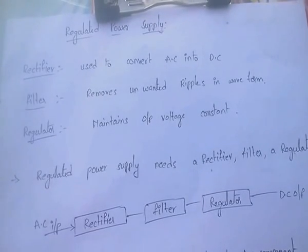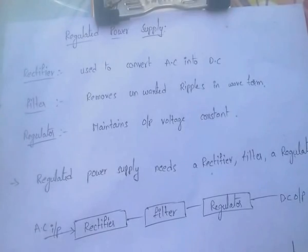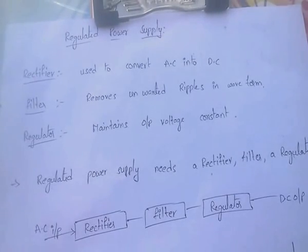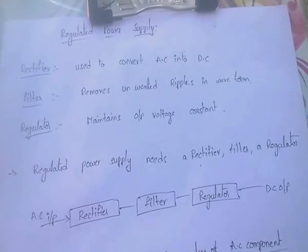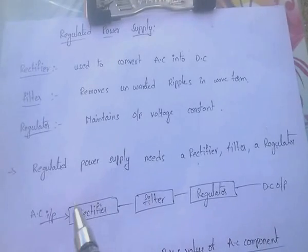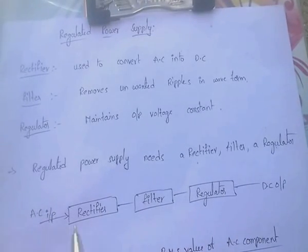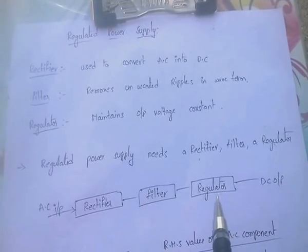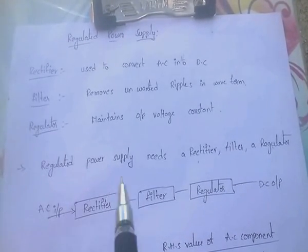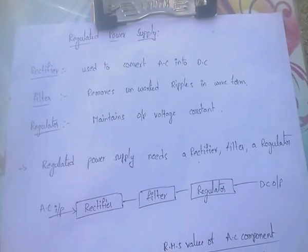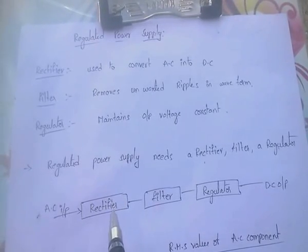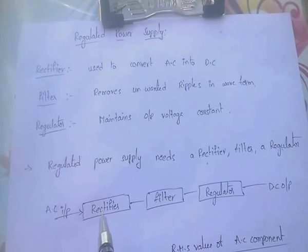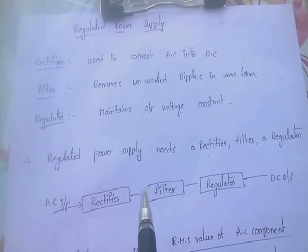In this video I am going to discuss electronic devices and circuits. Regulated power supply (RPS) needs a rectifier, filter, and regulator. That means the regulated power supply is a combination of a rectifier, filter, and regulator. The rectifier is used to convert AC into DC.